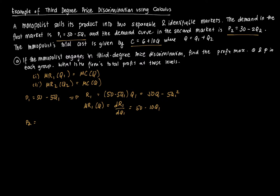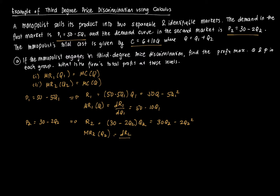For P2 equal to 30 minus 2Q2, revenue R2 equals 30Q2 minus 2Q2 squared. Taking the derivative DR2 over DQ2 gives marginal revenue MR2 equal to 30 minus 4Q2. That's the marginal revenue for the second market.